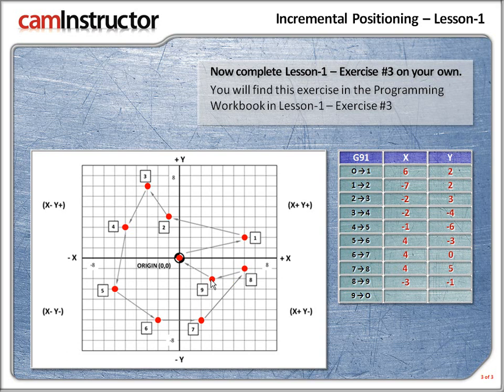Last one — 9 back to the origin. From 9, let's figure out the x: we're moving to the left in a negative direction, 1, 2, 3 squares. So x is minus 3. We're moving up in y, so that's going to be positive: 2 squares. So from 9 back to the origin, we have x minus 3 and y plus 2. This completes this video. Thanks for watching and I'll be talking with you soon.